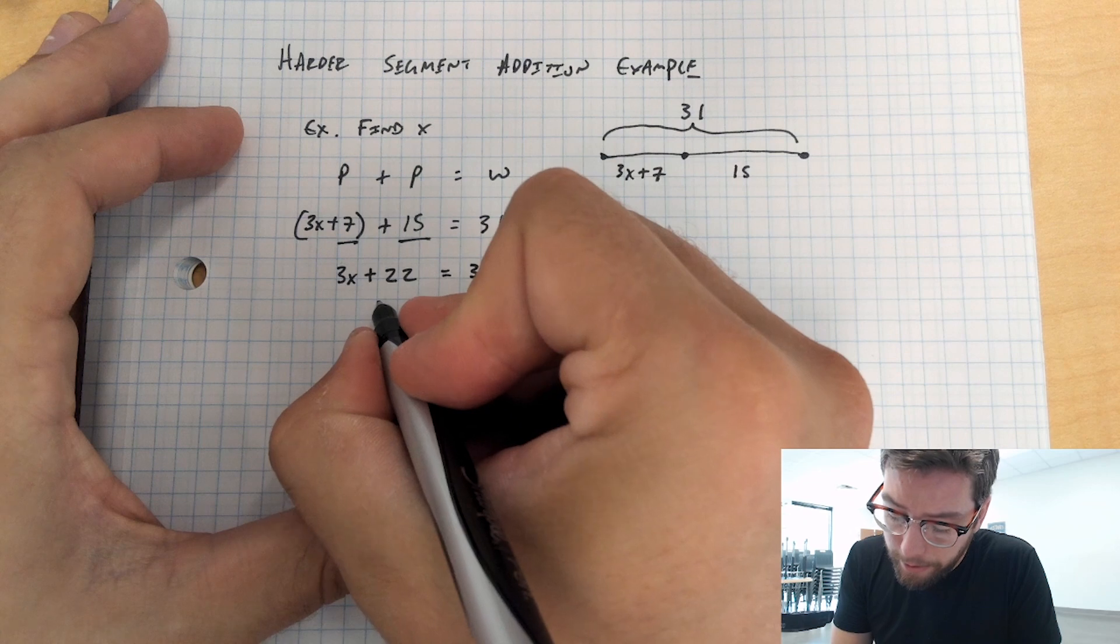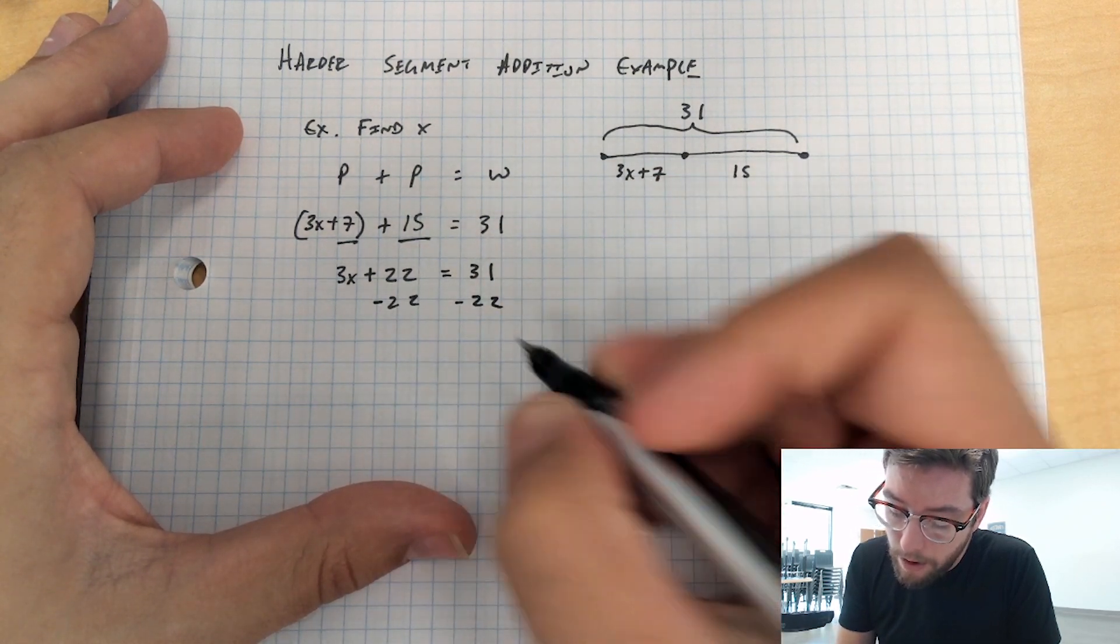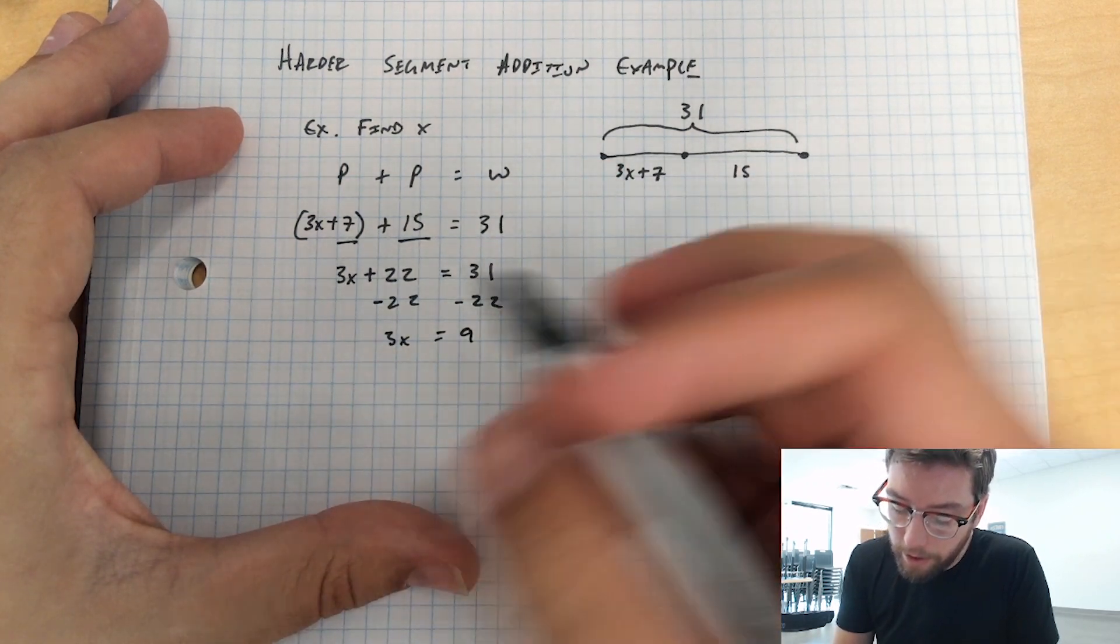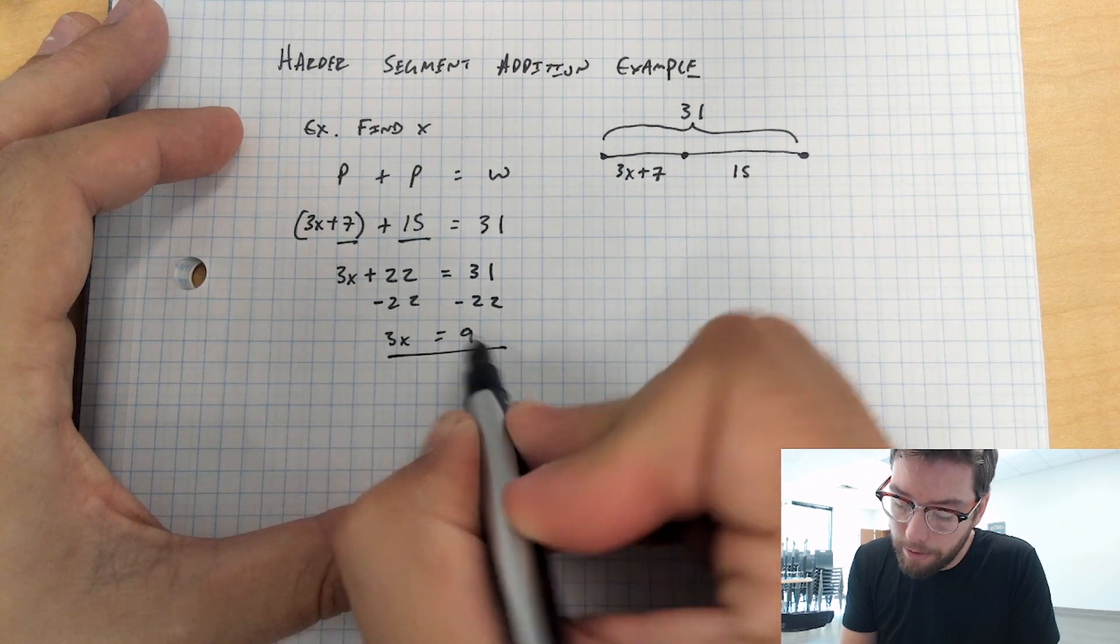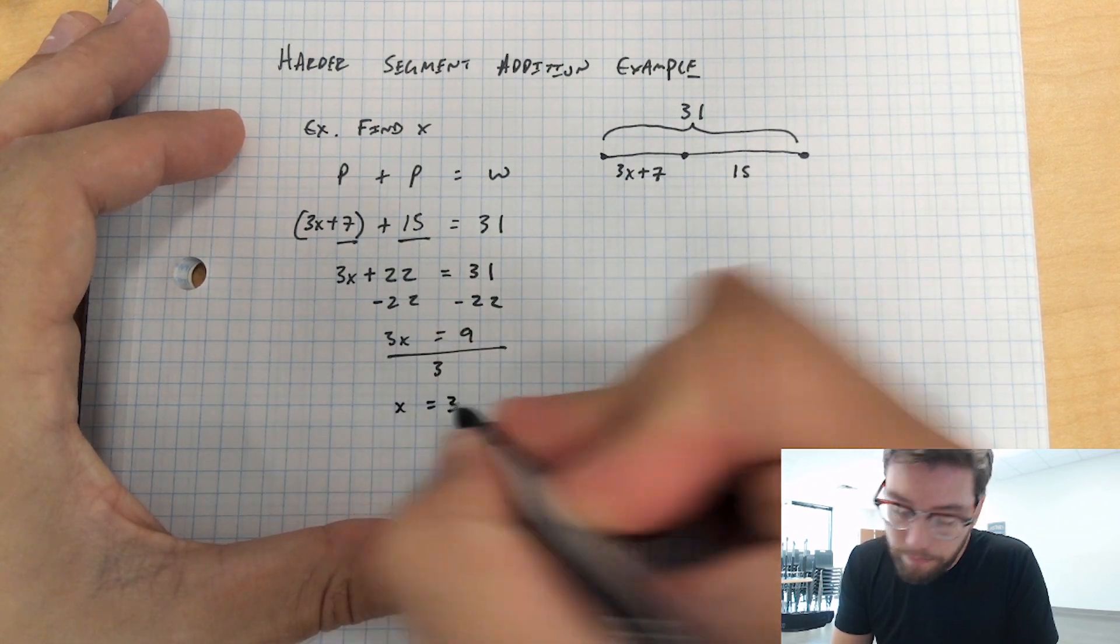Now we're going to subtract 22 from each side. That's going to leave us with 3x equals 9. Now we have to get that 3 to the other side, so we're going to divide the whole thing by 3, and x equals 3.